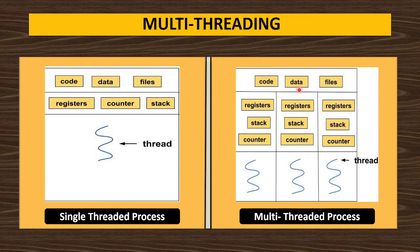But the code, data, and files can be shared by all three threads. All three threads can use the same data section, the same code section, and the same file section. So the code, data, and file section of the process is shared by all threads of that process.